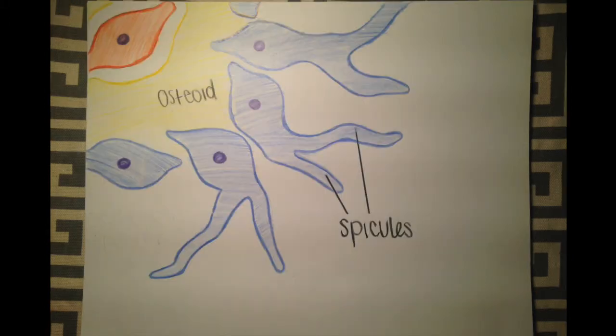As ossification continues, spicules form from the developing osteoblasts. These branch-like structures grow outwards from the ossification center.